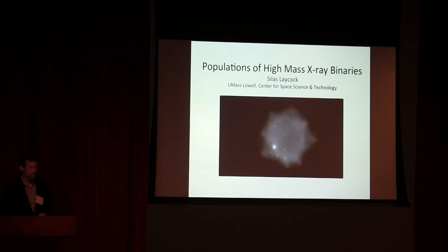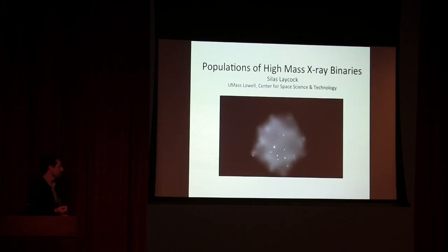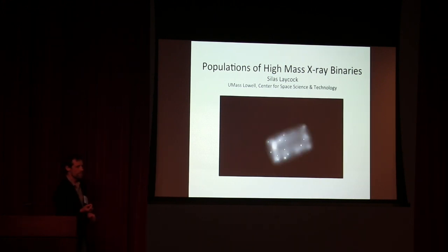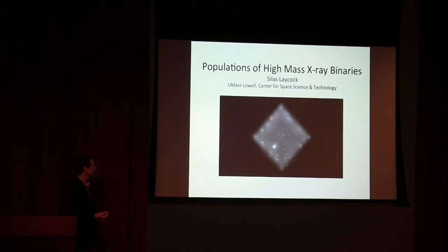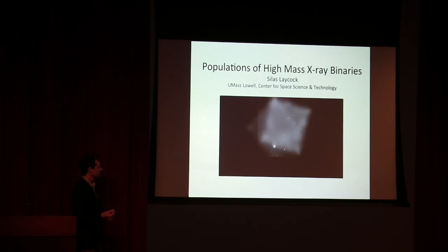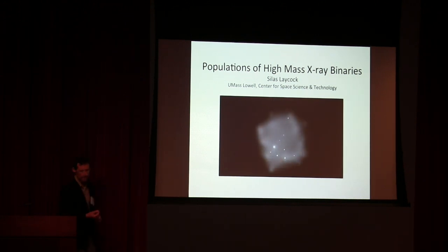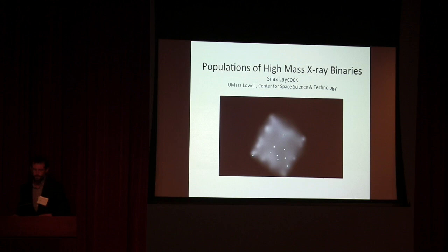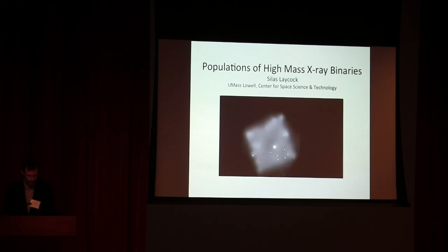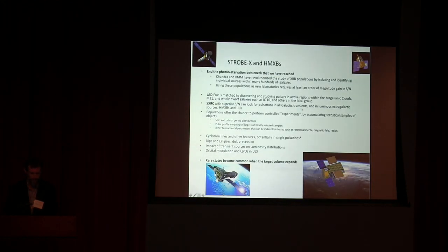With Strobe-X, of course, we don't have imaging — we only have the one pixel. So certain classes of objects are going to be very well observed by Strobe-X, and certain other classes are going to be difficult. One of the classes that's going to be very well observed is pulsating sources.